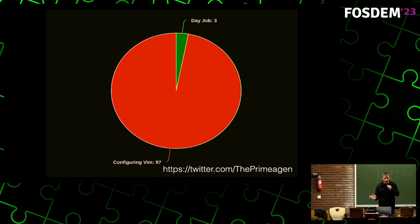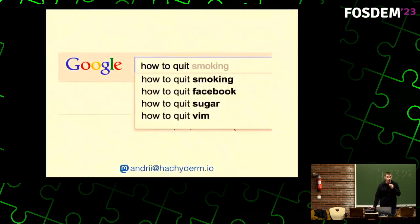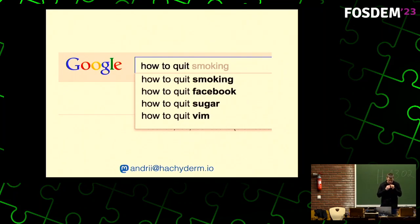Since all of you are using Neovim, I think you know how to quit Vim, right? No need to explain. So, first things first — Neovim is a fork of Vim which focuses on extensibility and usability. One of the examples is they added the ability to write plugins in Lua, which is great.